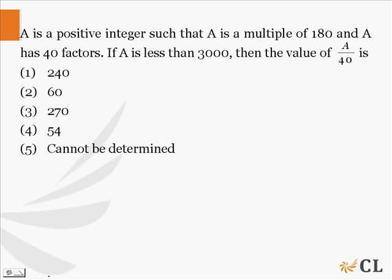This question says a is a positive integer such that a is a multiple of 180 and a has 40 factors. It is also given that a is less than 3000, then the value of a/40 is.